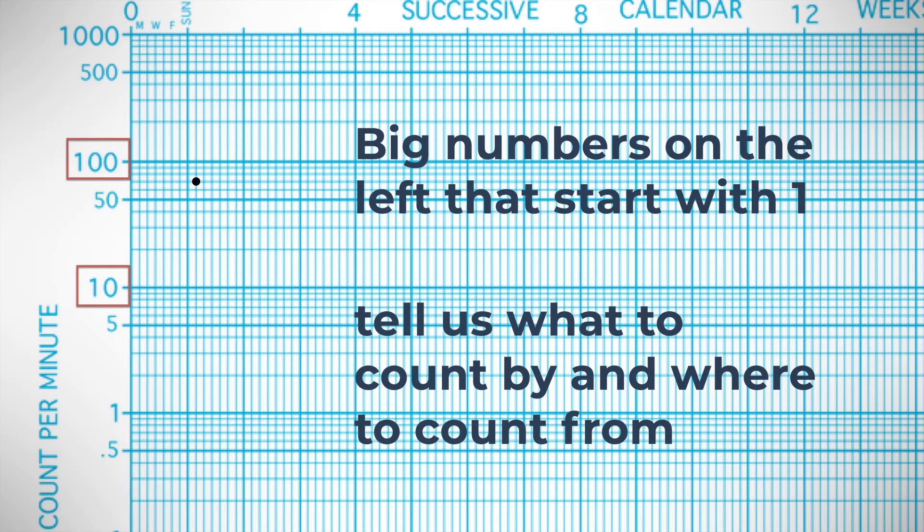You can use this to interpret frequencies by figuring out which big number on the left that starts with one you need to use to be counting up. So this frequency is between 10 and 100, so we're still in the phase where we're counting by tens. We can start from the 50 and just count by tens up from there: 60, 70, that's 70 per minute.